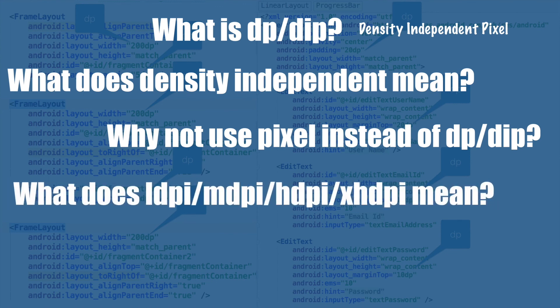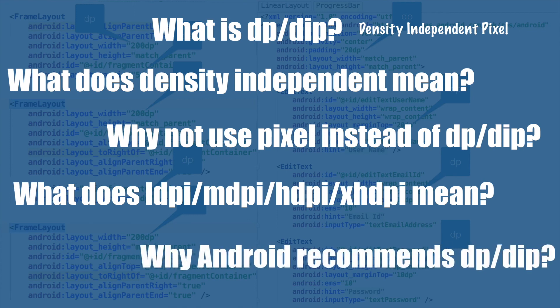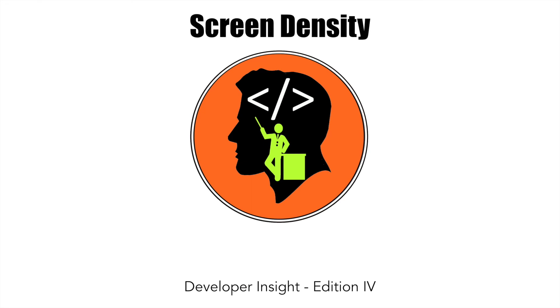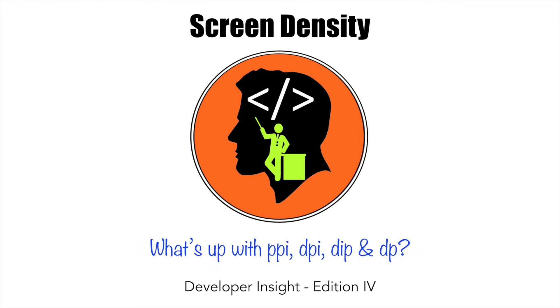What does LDPI, MDPI, HDPI, XHDPI mean in Android development? Why does Android recommend using the Density Independent Pixel while deciding the dimensions of screen layouts or UI widgets? That will be the focus of discussion in the 4th edition of Developer Insight. We will be talking about how screen density affects screen design, and we will get down to what's basically up with PPI, DPI, DIP, and DP.